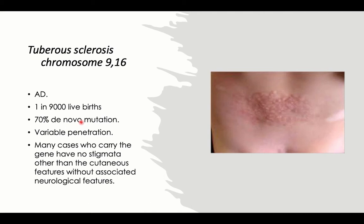The second neurocutaneous syndrome is tuberous sclerosis. It has much less incidence with 1 in 9,000 live births. It is autosomal dominant inheritance, but we have a high incidence rate of de novo mutations — up to 70% of cases are due to de novo mutations.